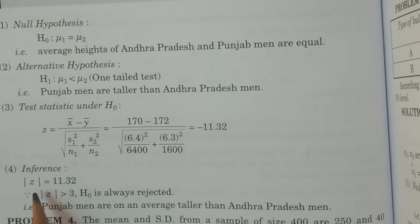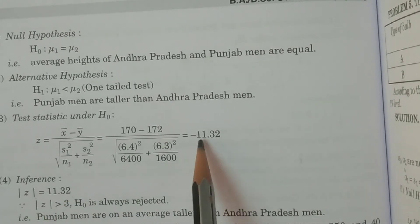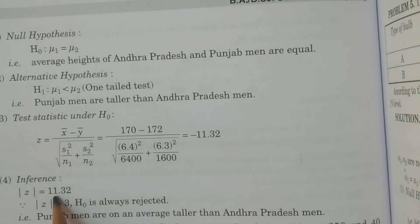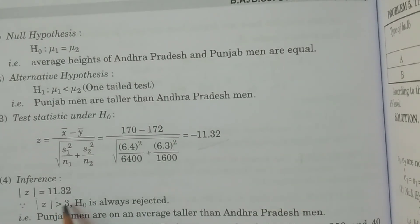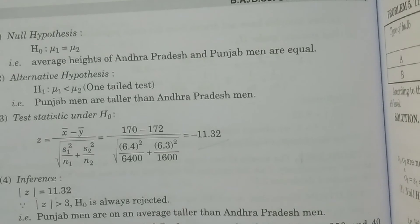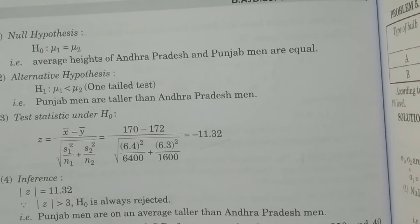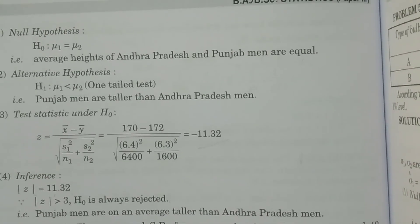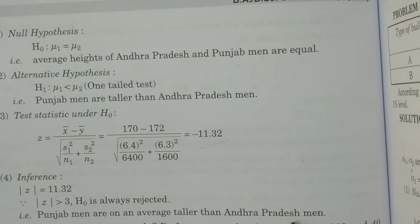Now for the inference: |z| = 11.32. Since this value is greater than 3, there is no need to compare with z-alpha (the critical value) because it is always greater than 3. Since |z| > 3, H0 is rejected and H1 is accepted. Therefore, we conclude that Punjab men are on average taller than Andhra Pradesh men.